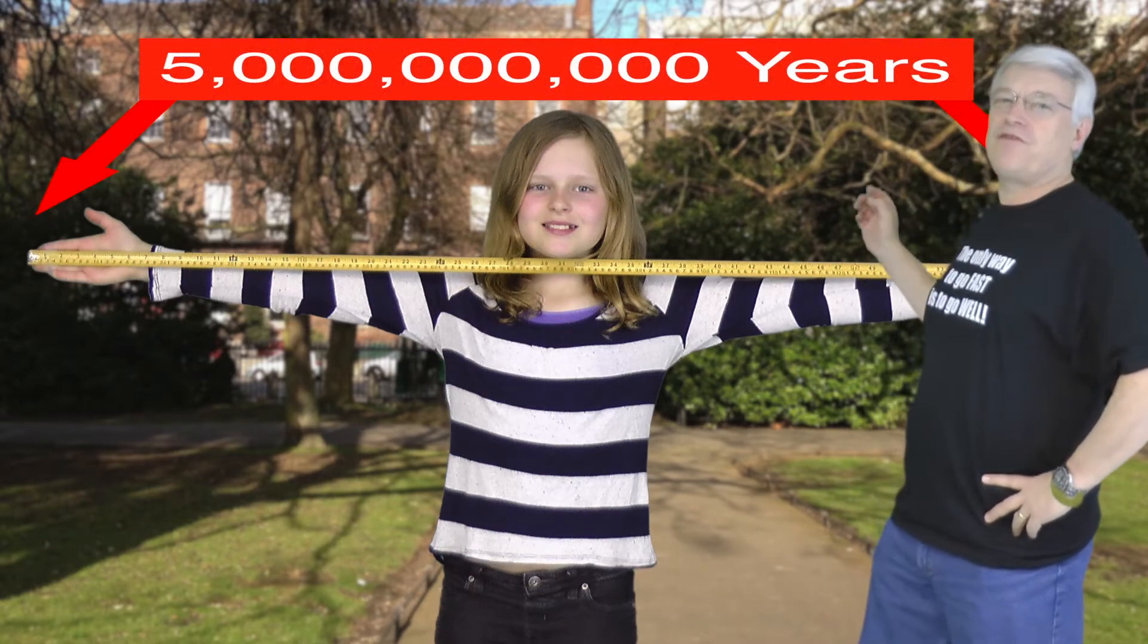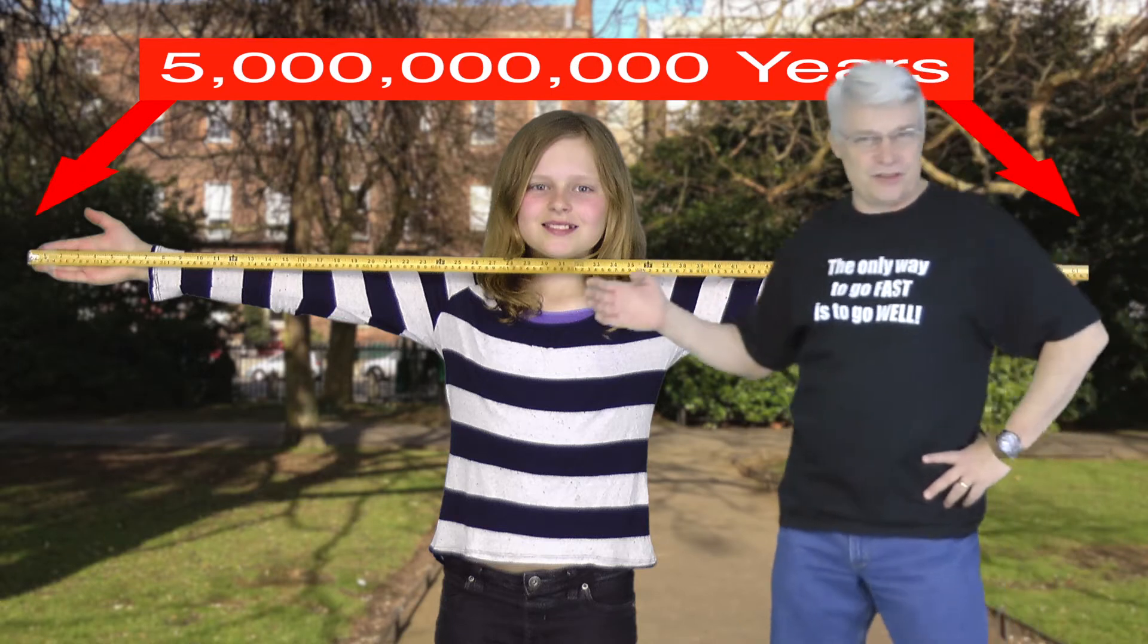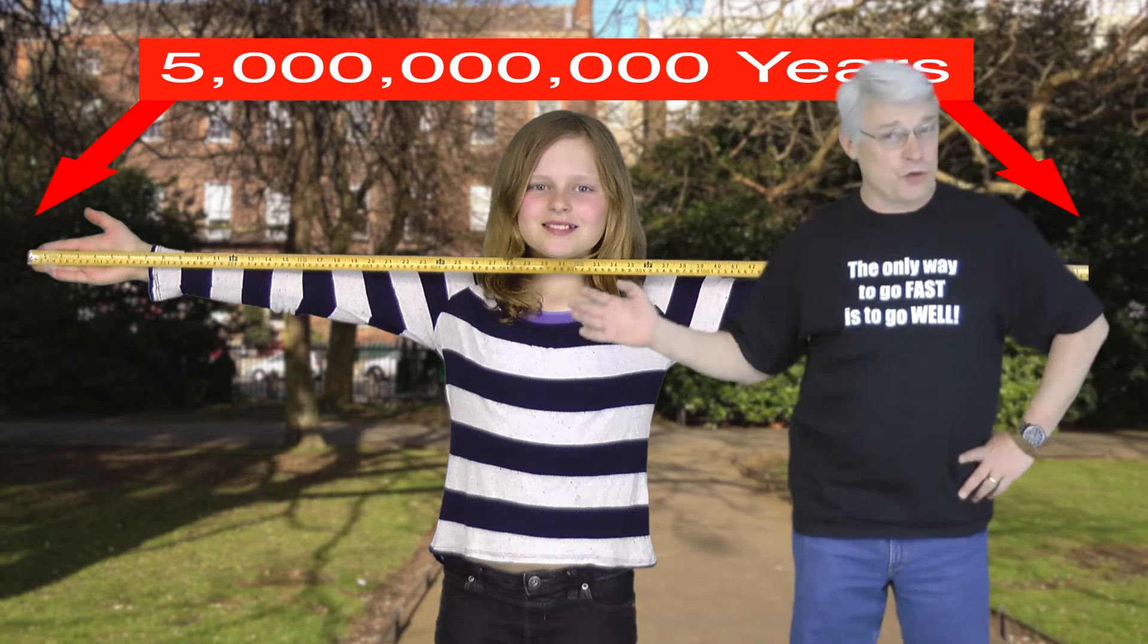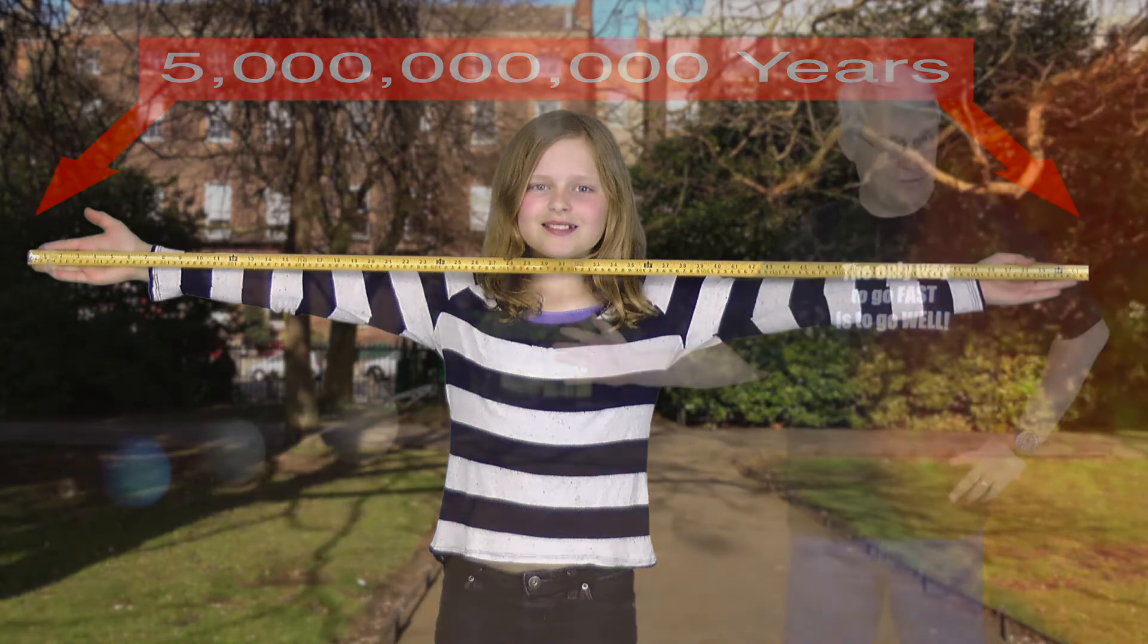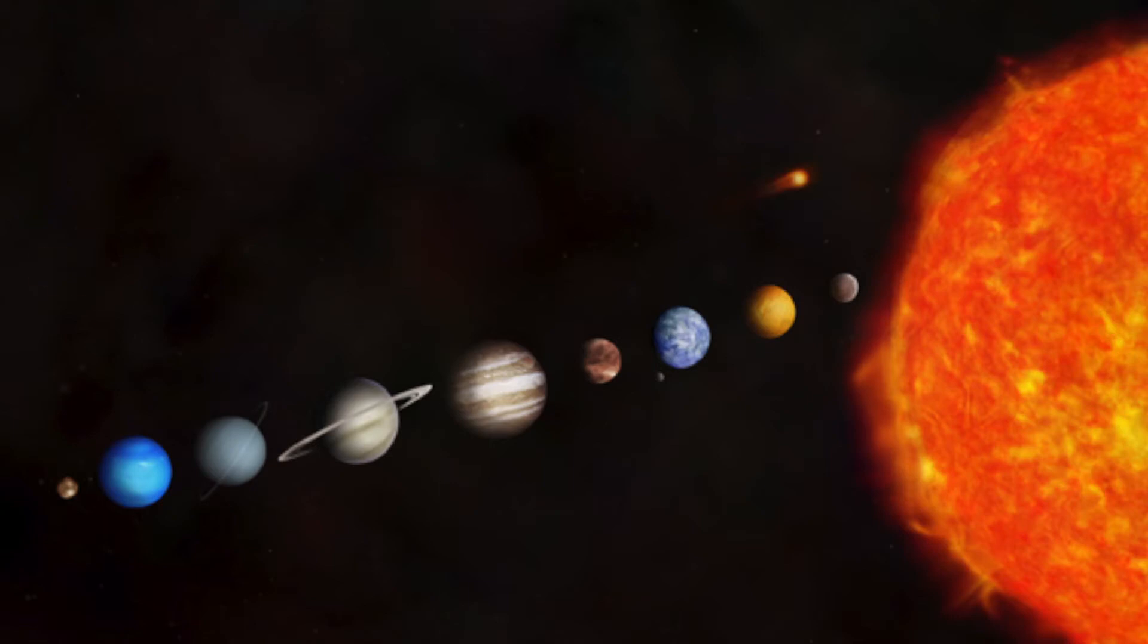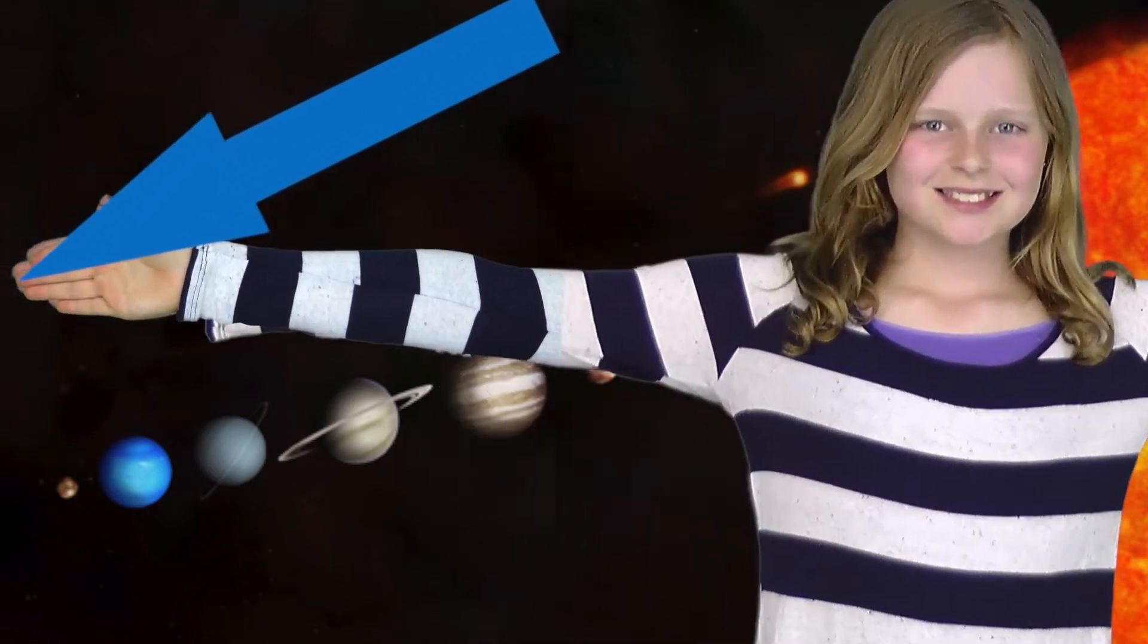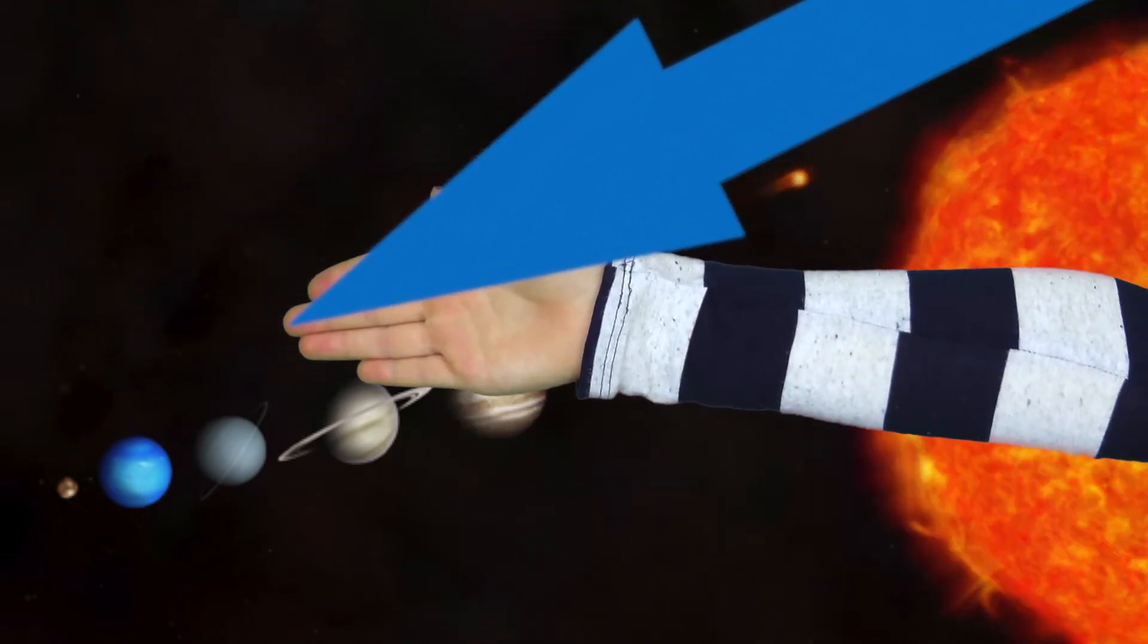Now imagine that's 5 billion years, roughly the age of the solar system. The solar system begins here, right at the tip of her middle finger. About 5 billion years ago there was a molecular cloud, about 60 light years in diameter, just hanging out in space. It was 90% hydrogen, 8% helium, and 2% dust.